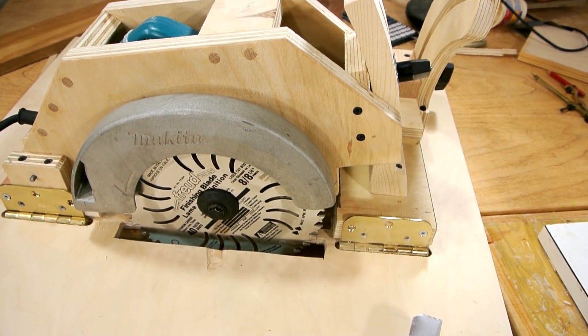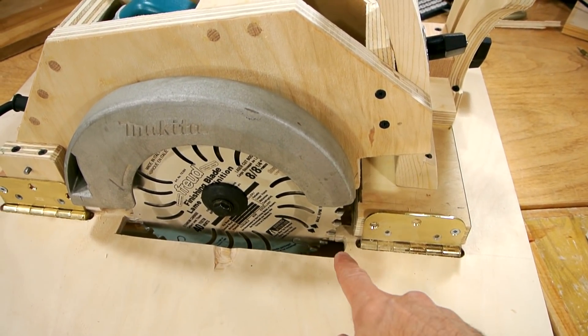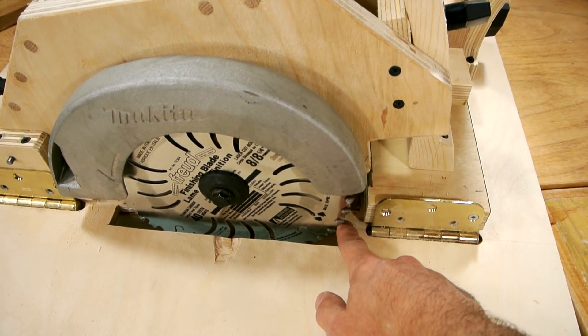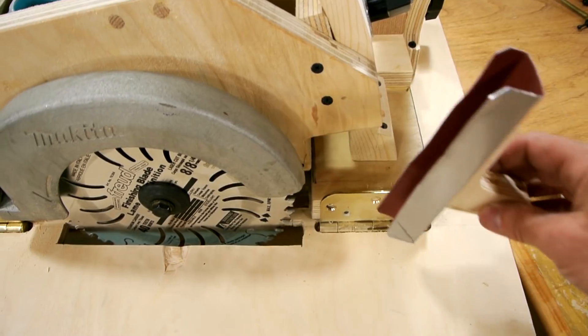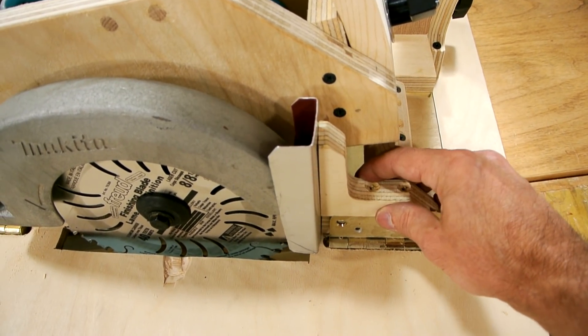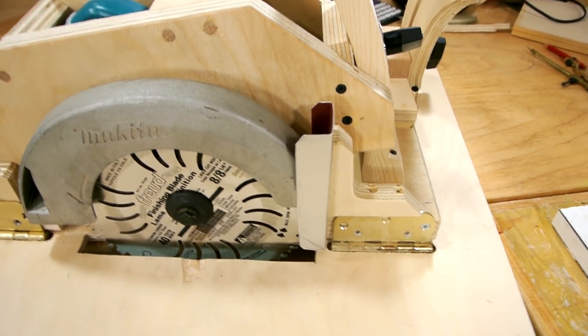When I was testing the saw, I was getting a lot of sawdust coming out the front because as the sawdust comes off the blade here, it just comes out like this and basically hits me. So I made this little sawdust deflector which will deflect it down.